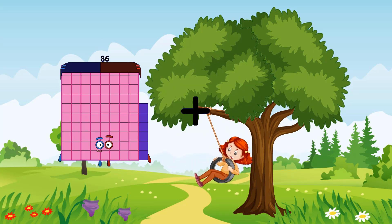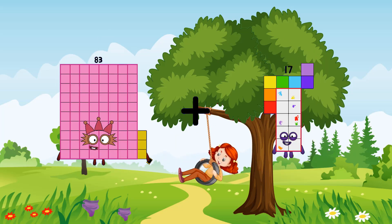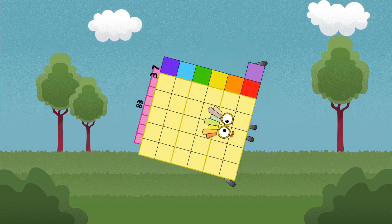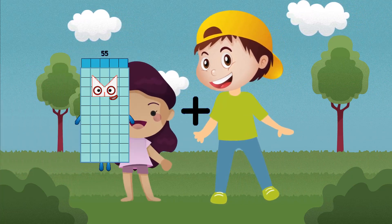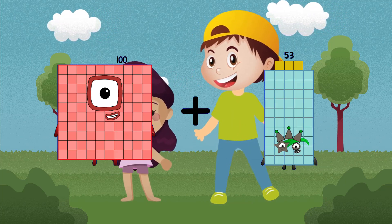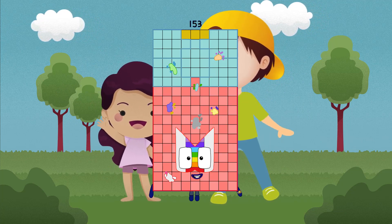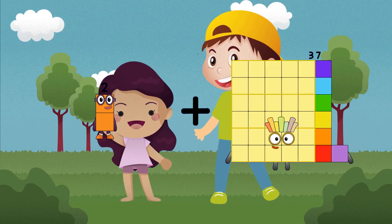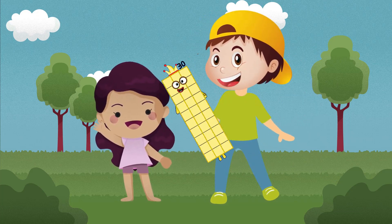83 plus 37 equals 120. 100 plus 53 equals 153. 2 plus 28 equals 30.